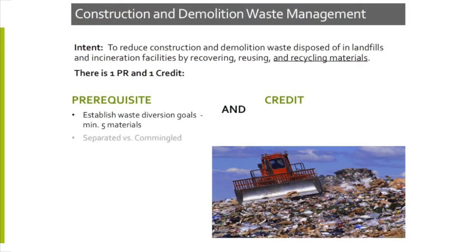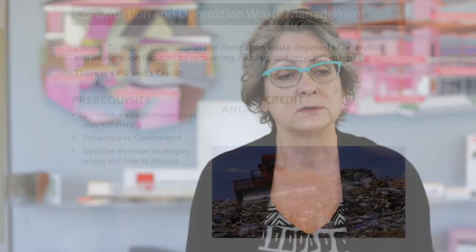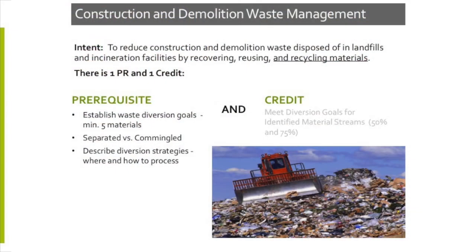Establishing waste diversion and identification of at least five materials for diversion is one of the prerequisites. You may get questions about Owens Corning products and whether they can be diverted — if that does happen, please call our 1-800-GET-PINK hotline for questions such as that. There's also a credit for meeting diversion goals for at least 50 percent or 75 percent of the waste stream from the project.